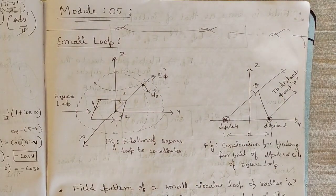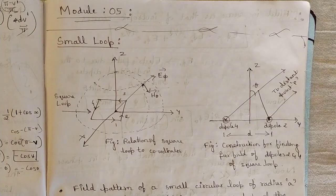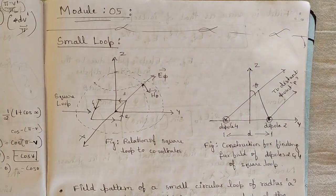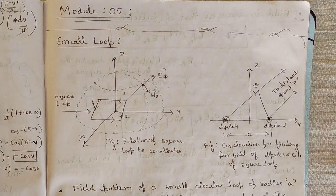In this module, that is module 5, it is not a very lengthy module. We are going to be seeing some important types of antenna. Module 4 was just the beginning of how antenna is introduced with respect to antenna fields, radiation resistances, antenna aperture — those basics were discussed in modules 3 and 4 combined. In this module we are going to see different kinds of antenna, their characteristics, and some important derivations with respect to their relationships.